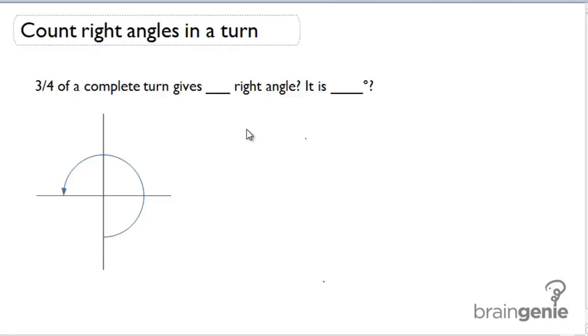In order to count right angles in a turn, we first need to understand what a turn is. A turn is one full 360 degrees.